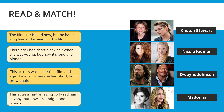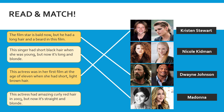Number six: 'This singer had short black hair when she was young but now it's long and blonde' — that is Madonna. Number seven: 'This actress was in her first film at age 11 when she had short light brown hair' — that is Kristen Stewart. Number eight: 'This actress had amazing curly red hair in 2003 but now it's straight and blonde' — that is Nicole Kidman.